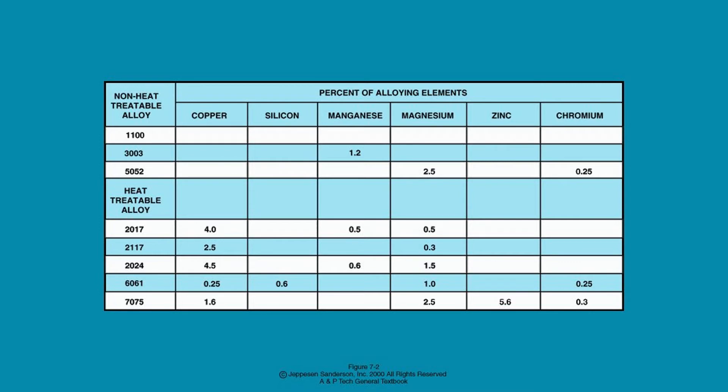Here you can see a chart of the four-digit numbering system for a few of the aluminum alloys and their chemical makeup. This chart is just for illustration and there is no need to copy or memorize it.